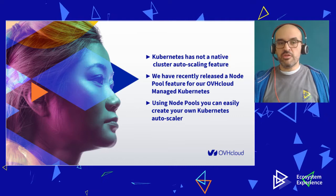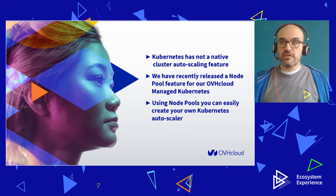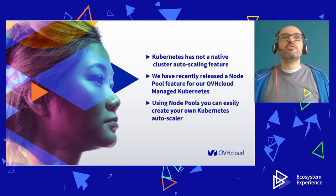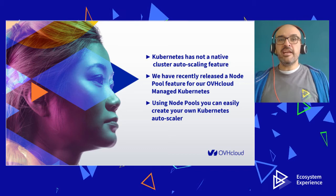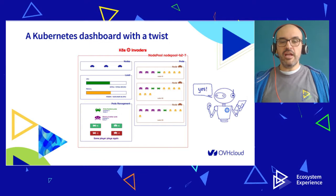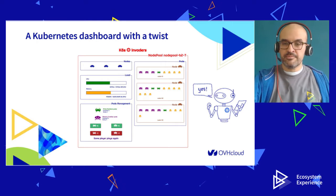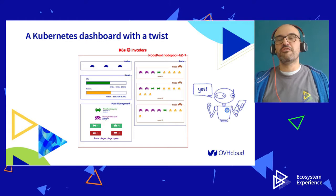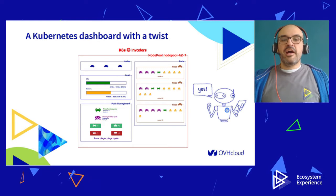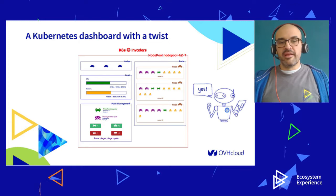So what are we talking about? Well, Kubernetes has no native cluster autoscaling feature. It means that you can scale your pods around your nodes, but if you need a new node, it isn't easy. We have recently released a new feature in our managed Kubernetes node pool, and they are going to help us to have a real autoscaling in your Kubernetes cluster. We are going to do a demo using a custom dashboard for Kubernetes with a twist: Kubernetes Invaders.